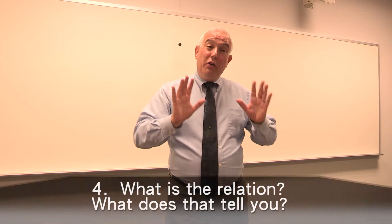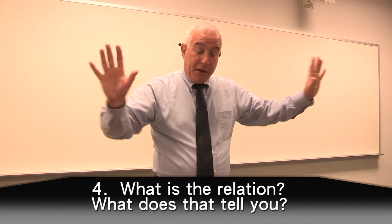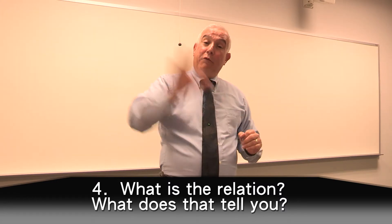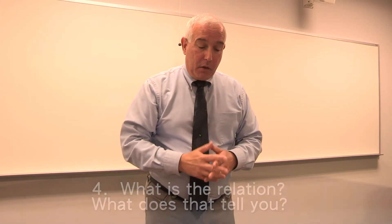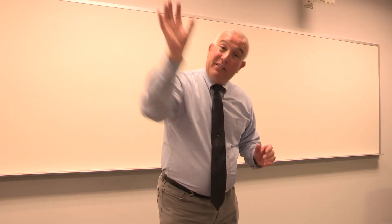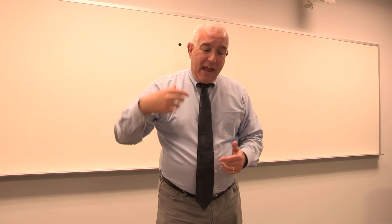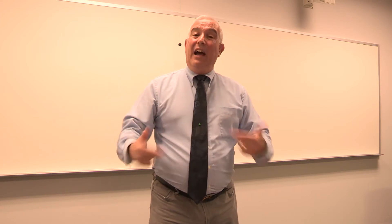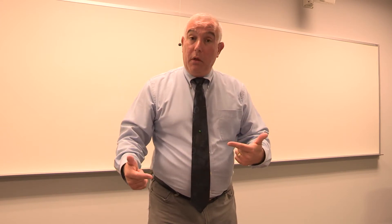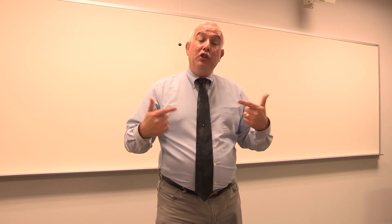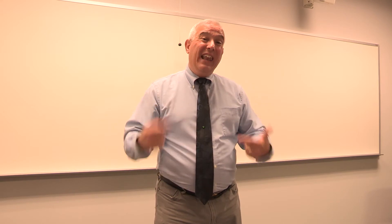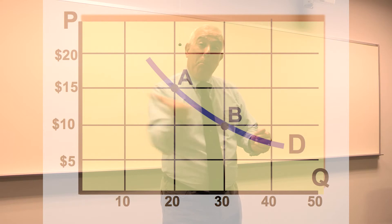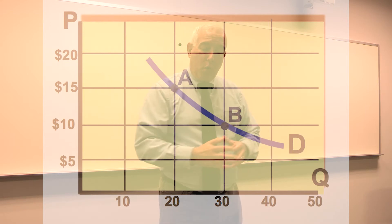In step four, you move back from the graph to get the big picture and imagine you're walking on the graph from left to right on the line — because that's how we read. And as you're walking on this graph, you're walking downhill. That means the graph is showing you what I call a less-and-more relationship: less price, more quantity demanded.